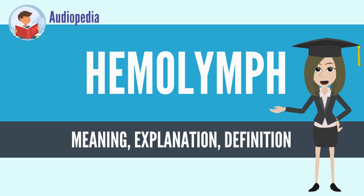It is the major tissue type of the open circulatory system characteristic of arthropods, e.g. arachnids, crustaceans, and insects. In addition, some non-arthropods such as mollusks also possess a hemolymphatic circulatory system.